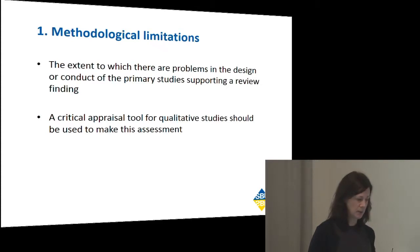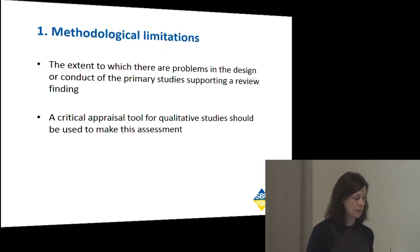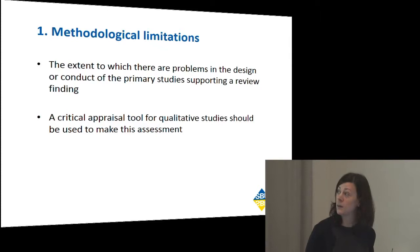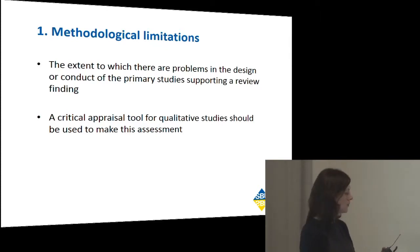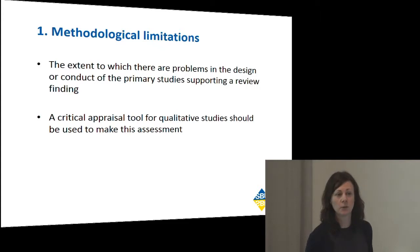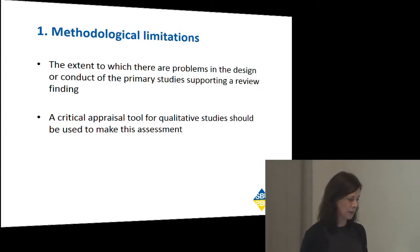The first component is methodological limitations: the extent to which there are problems in the design and conduct of the primary studies supporting the review finding. You need to use a critical appraisal tool. As most of you know, there's not really a consensus around one of these tools — there are quite a lot of different tools out there. The CIRQL team are currently working on addressing whether a new tool is needed or if something useful already exists.